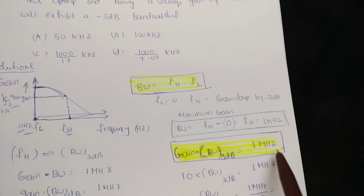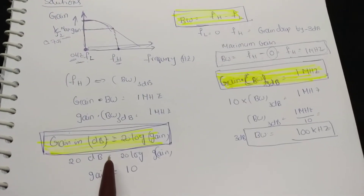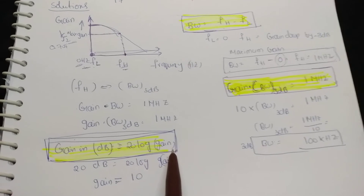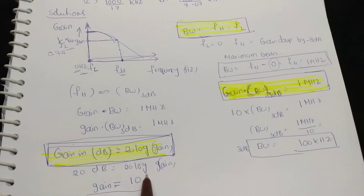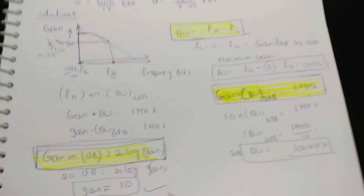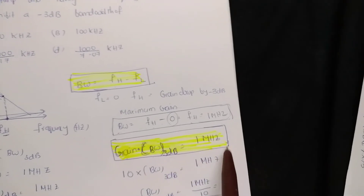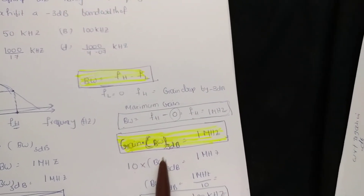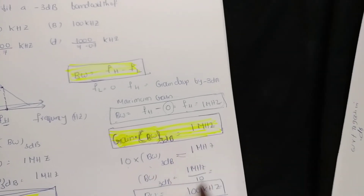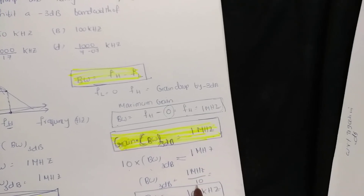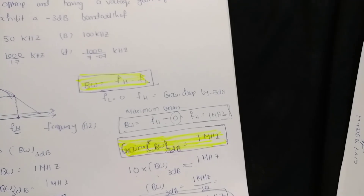The gain-bandwidth product equals 1 megahertz. The voltage gain in decibels is 20 dB, so: 20 dB = 20 log(gain), which gives gain = 10. Therefore, the -3 dB bandwidth equals 1 megahertz divided by 10, which equals 100 kilohertz.